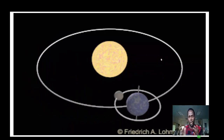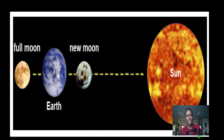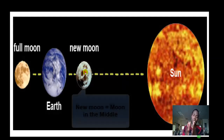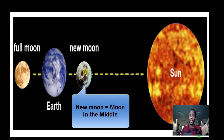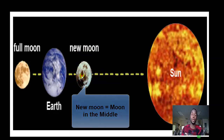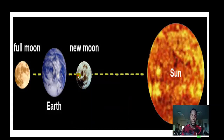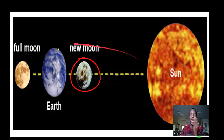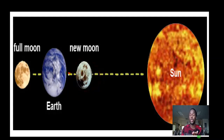We'll start with the ones that are easily recognizable. The first is the new moon. The new moon is the position where the moon is between the Earth and the Sun. When you look at the sky in this phase, all you see is complete darkness, because it's the shadow side of the moon facing Earth. The moon blocks the light from reaching us.